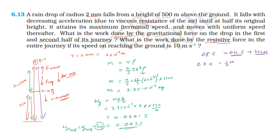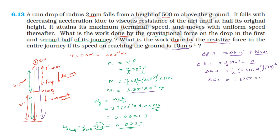Change in kinetic energy equals final kinetic energy minus initial kinetic energy. Initial kinetic energy is 0. Final kinetic energy is half into m into v squared. Half into mass 3.351 into 10 to the power minus 5, into final velocity 10 metres per second squared — so 10 squared. This gives an increase in kinetic energy of 1.6755 into 10 to the power minus 3.